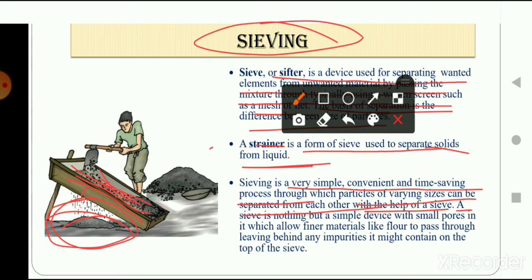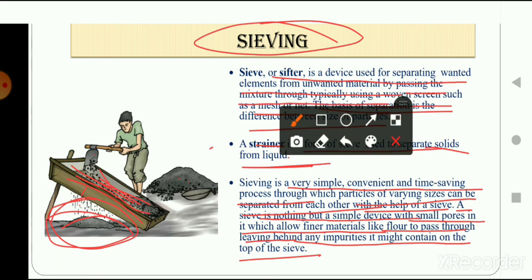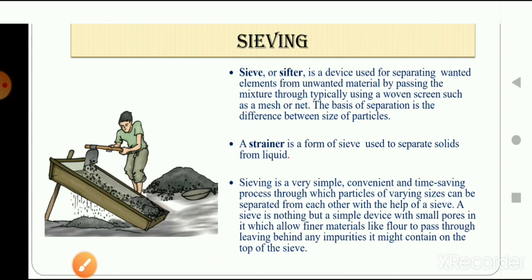A sieve is a simple device with small pores that allows fine materials like flour to pass through, leaving behind impurities on top. The size of the useful material is small, so it passes through the holes and is collected in a plate, while the impurities remain on the sieve. These were the methods of separating a mixture of solid from solid.